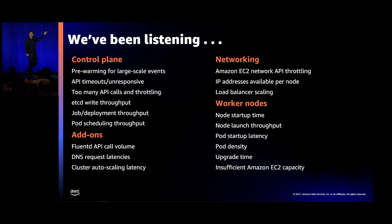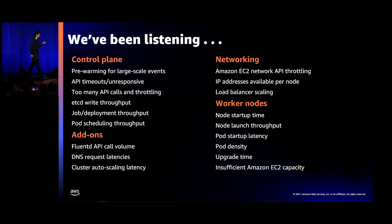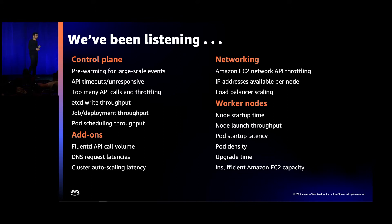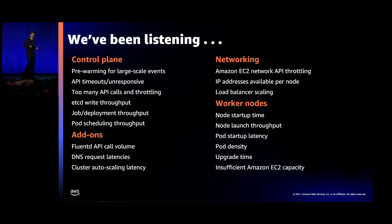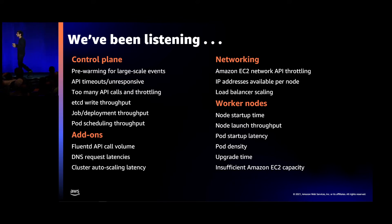Since we launched EKS as generally available more than three years ago, we have been constantly listening to customers on the different dimensions they want to improve. Based on my experience working with Amazon EKS, the top concerns customers raise are API latencies, API throughput, performance of worker nodes, how quickly you can launch and tear down pods, DNS query rates and networking latencies, and how to scale your add-ons and worker nodes.